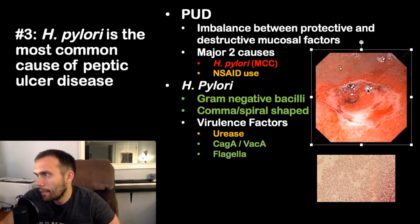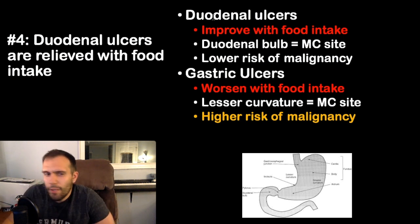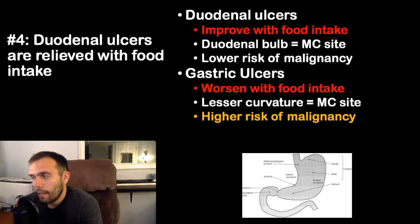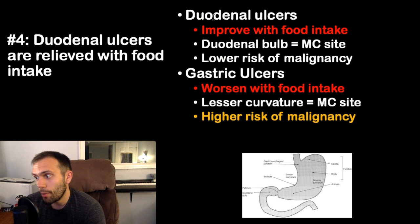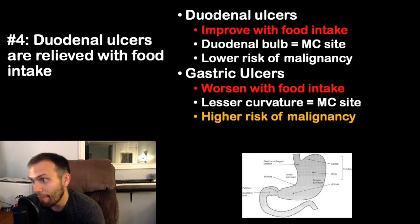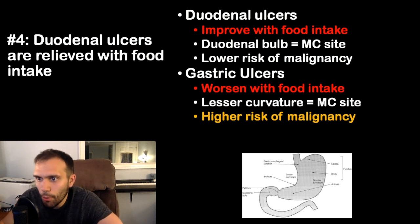Fact four: duodenal ulcers are relieved with food intake, whereas gastric ulcers worsen with food intake. The duodenal bulb is the most common site for duodenal ulcers; the lesser curvature of the stomach is the most common site for gastric ulcers. Gastric ulcers have a higher risk of malignancy. Patients with duodenal ulcers tend to gain weight; patients with gastric ulcers tend to lose weight.